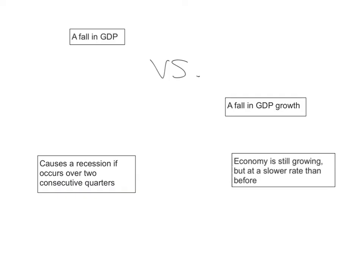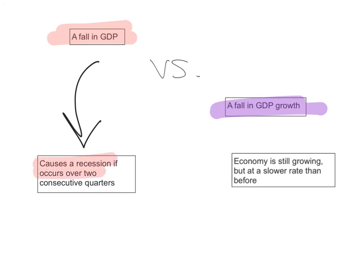You should be able to distinguish between a fall in GDP and a fall in GDP growth — they are two different concepts. A fall in GDP means real GDP is falling altogether, and if it occurs over two or more consecutive quarters, it causes a recession. A fall in GDP growth, on the other hand, means the economy is still growing but at a slower rate than before — real GDP is still rising, just that the growth rate is slowing down. When discussing economics and business cycles, you must distinguish between these two concepts.